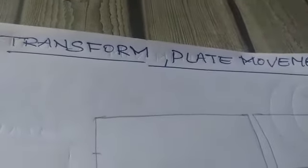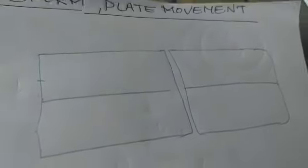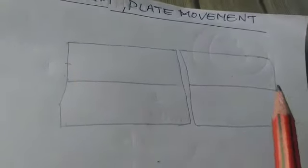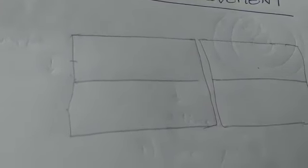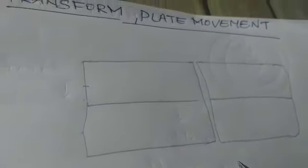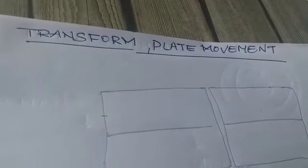What is transform plate movement? When two plates horizontally slide past each other, due to the result of volcanic eruptions and earthquakes, transform plates are formed.